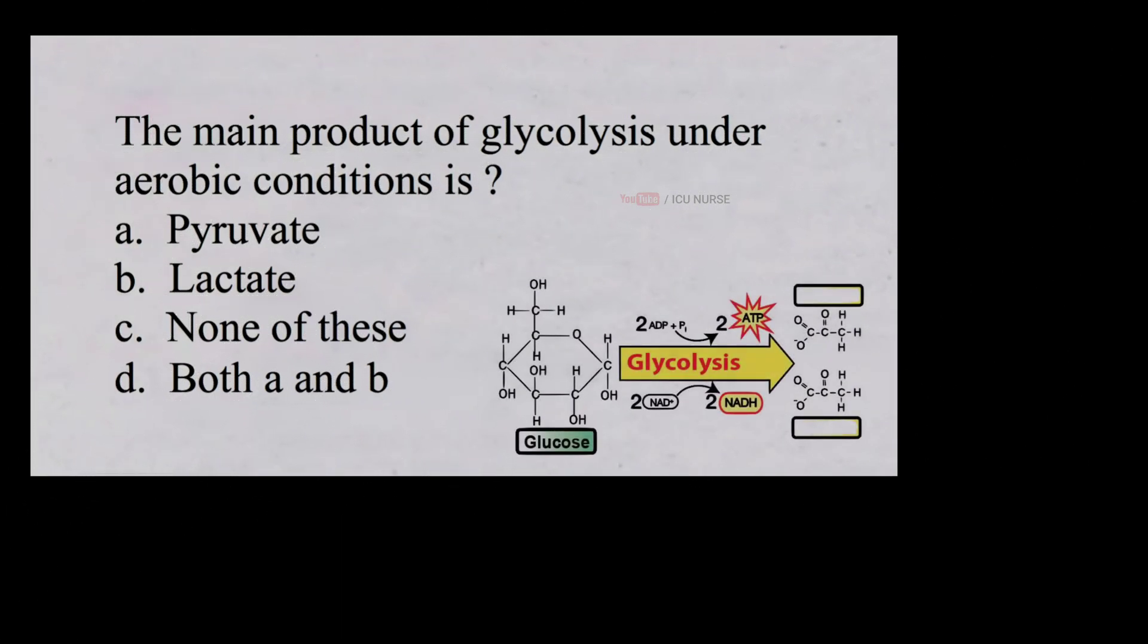The main product of glycolysis under aerobic conditions is: a. Pyruvate, b. Lactate, c. None of these, d. Both A and B. And the correct answer is a. Pyruvate.